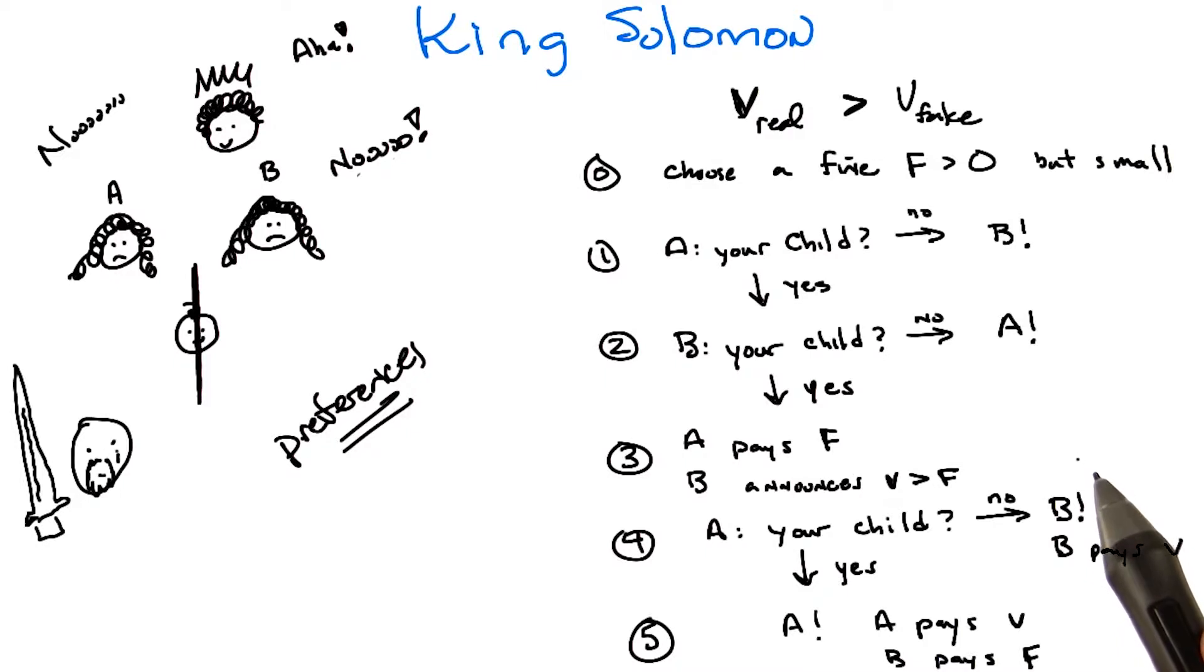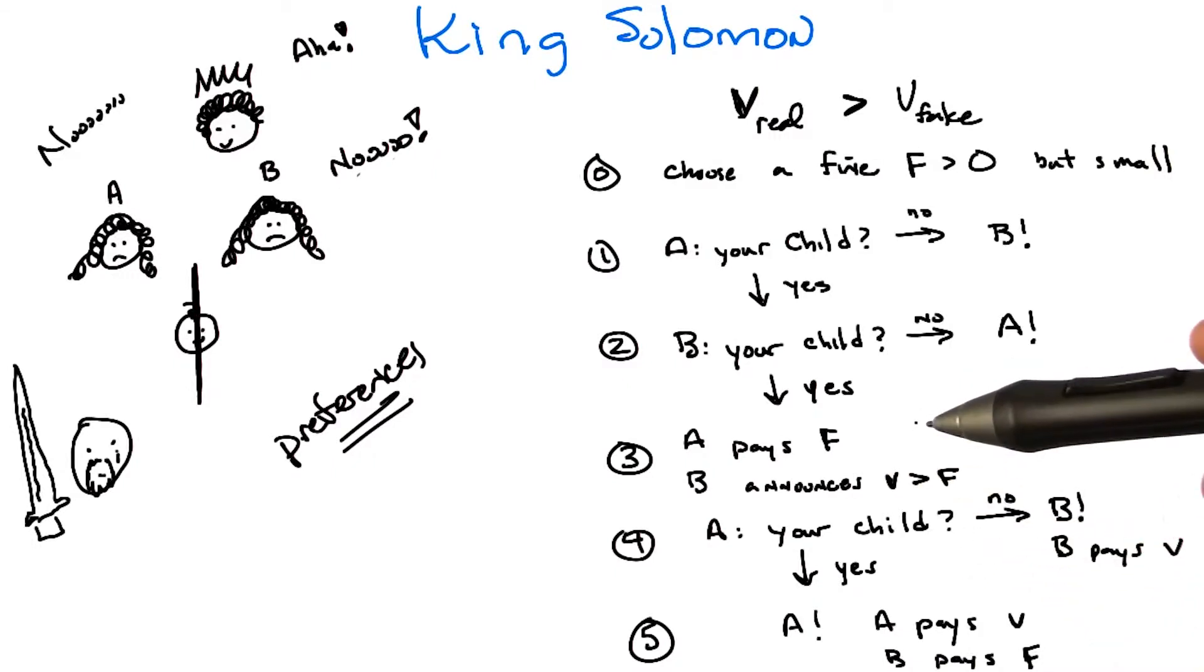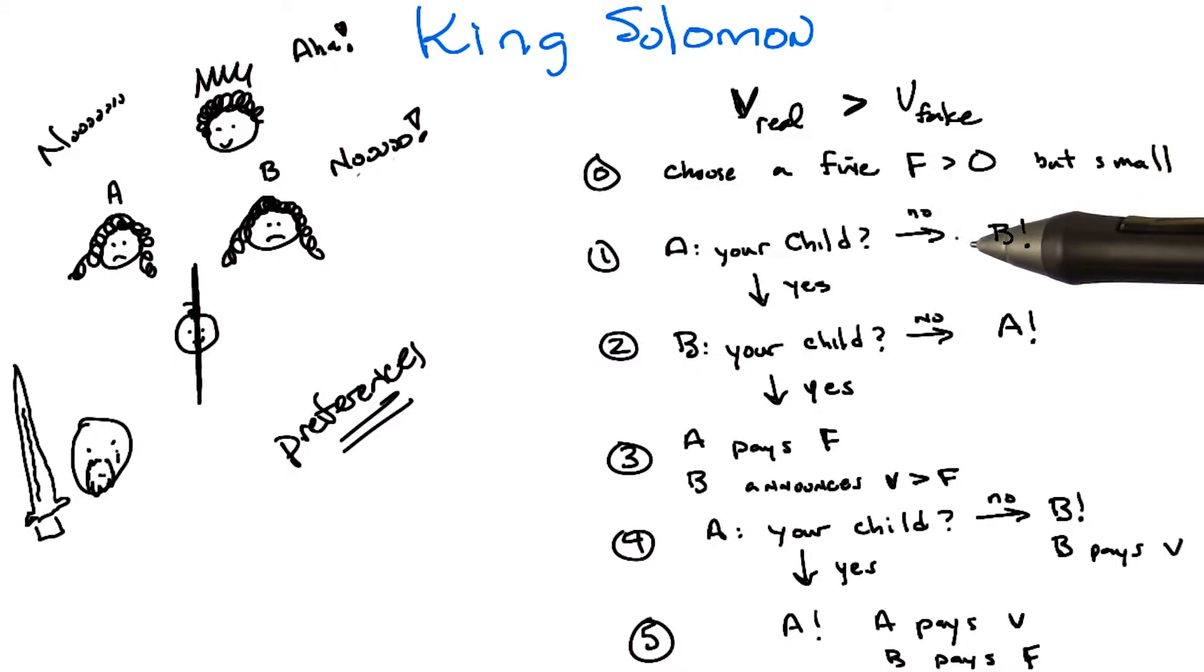The point is, but your point is that because of this fact, because of the fact that if A lets it get this far, knowing that A is not the mom, it's going to cost A the fine. Right, and A will not get the baby. So that means A doesn't want it to get this far, which means when asked the question, having thought it all through, A will just say no.